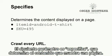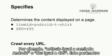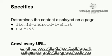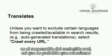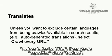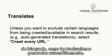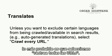The next parameter is Specifies. Specifies determines the content displayed on the page. For example, item ID equals Android T-shirt, or SKU equals 495. The Specifies parameter is responsible for the actual content, so you'll likely select 'Crawl Every URL.' After Specifies is Translates. Unless you want to exclude certain languages from being crawled and available in search results — like auto-generated translations — it's likely you'll select 'Crawl Every URL.'